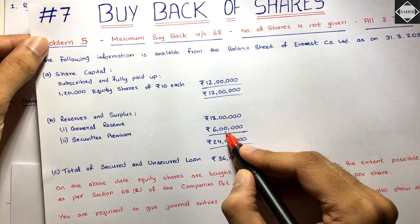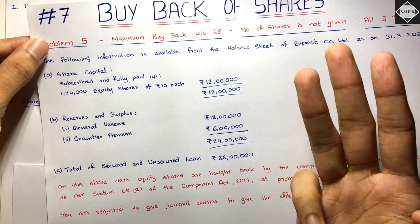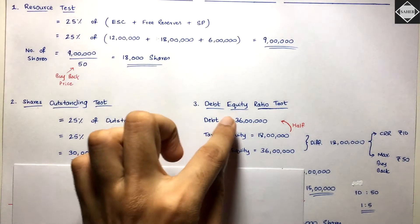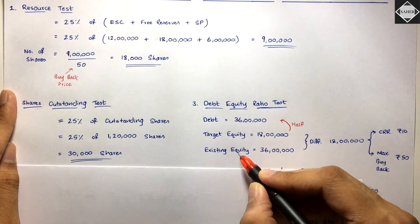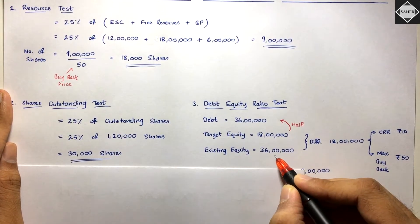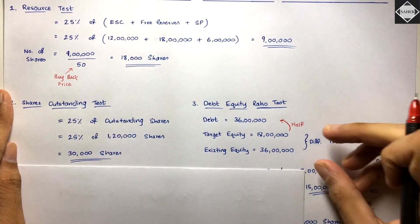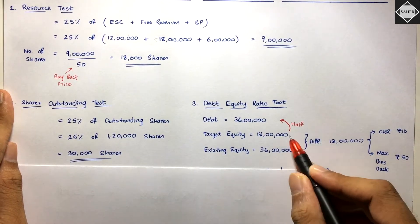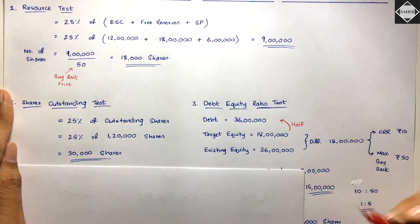Existing equity is 12 + 18 + 6 = ₹36 lakhs (paid-up share capital + free reserves + securities premium). The maximum reduction in equity that can happen is: existing equity ₹36 lakhs minus target equity ₹18 lakhs = ₹18 lakhs reduction allowed.